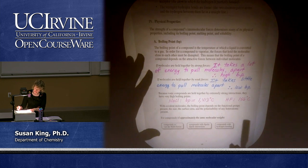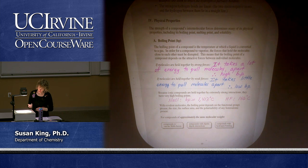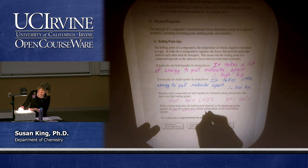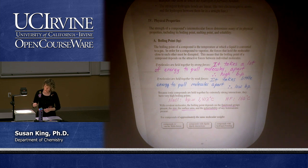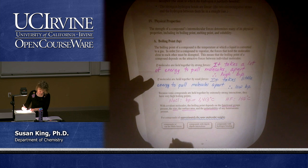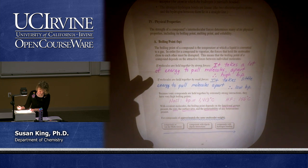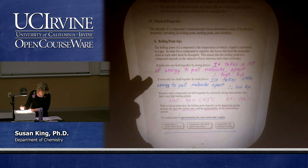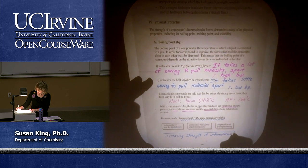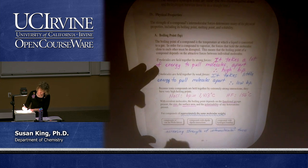With covalent molecules, boiling point depends on functional groups present, surface area, and polarizability. For compounds of approximately the same molecular weight — and this is important — we see increasing intermolecular forces going from Van der Waals compounds to dipole-dipole compounds to compounds with hydrogen bonding, which means increasing boiling point. But it's important to compare compounds with approximately the same molecular weight, because a very large nonpolar compound can have a higher boiling point than a smaller hydrogen-bonding compound.